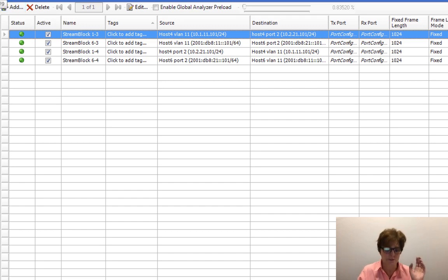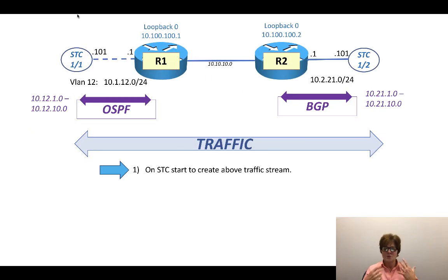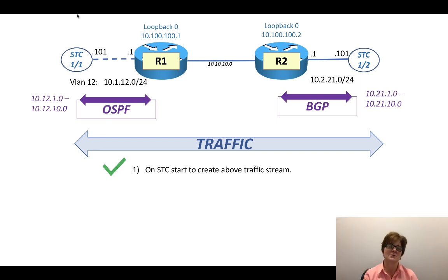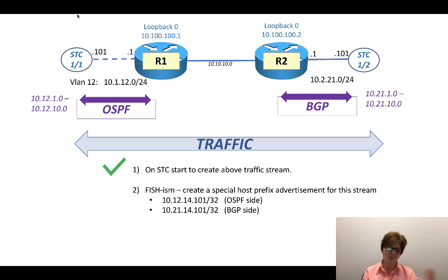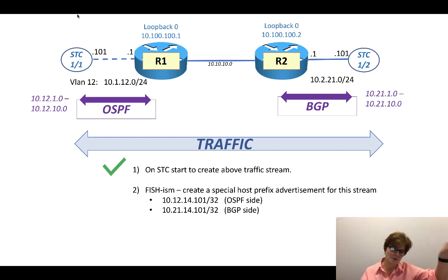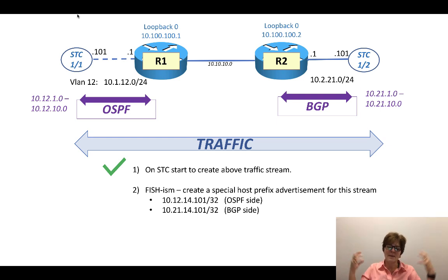Habit of mine - whenever I see apply is green I just click it. So we attempted to do this, and I'm going to call it a 'fishism.' This is just my years of experience doing proof of concepts and trying to tease out what it is we're actually trying to test. I've gone down the Alice in Wonderland rabbit hole a number of times. So what I do is I have what I call a fishism - I create a special host prefix advertisement specifically for this traffic stream. You might have a thousand OSPF prefixes on the left and five thousand BGP prefixes on the right - those are background prefixes.